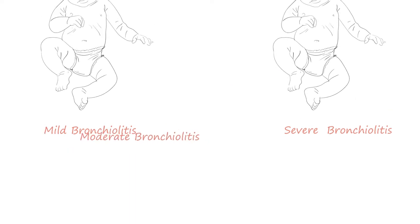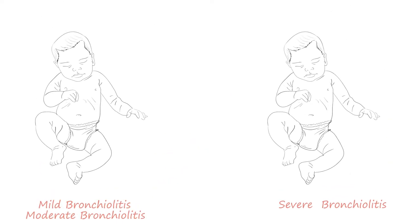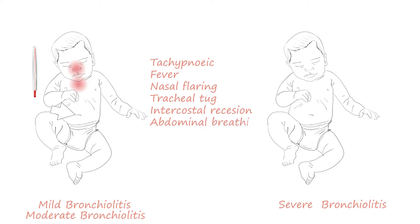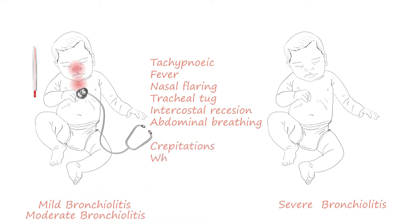Infants with mild to moderate bronchiolitis typically are tachypneic, have a fever, and have signs of increased work of breathing such as nasal flaring, tracheal tug, intercostal recessions, and abdominal breathing. On auscultation, they can have inspiratory crepitations and a wheeze.